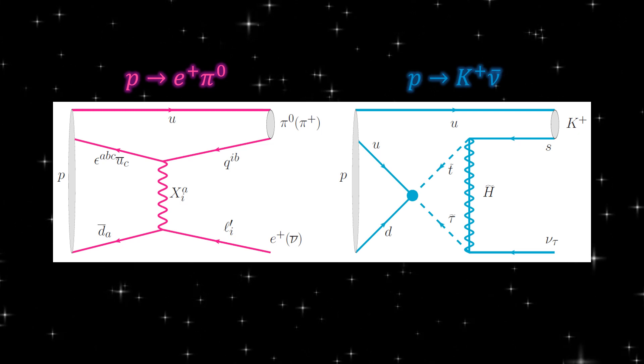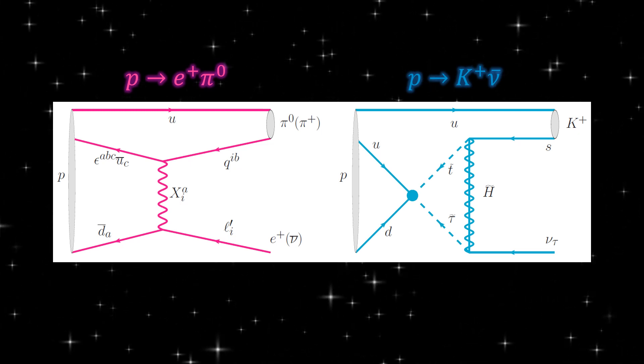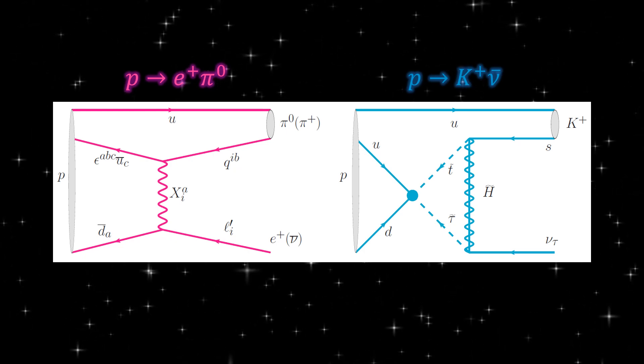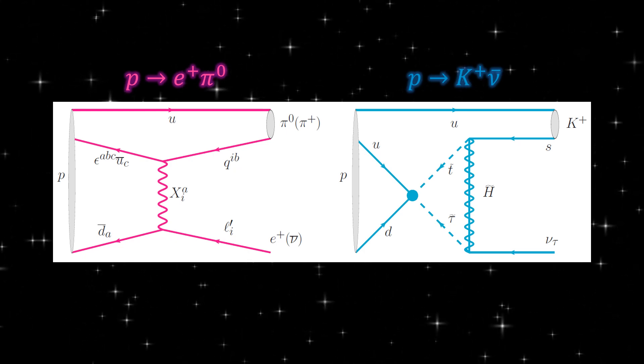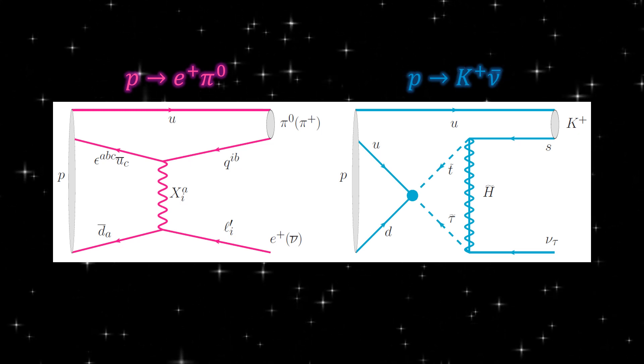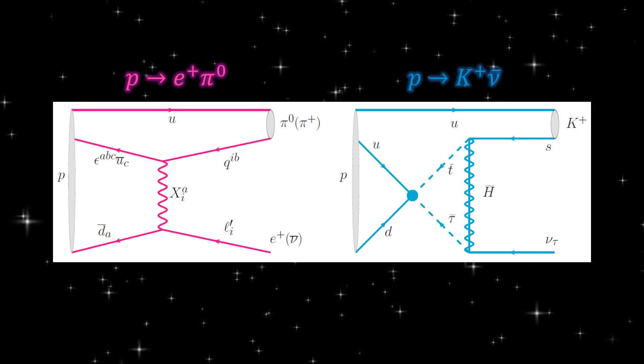In models of quark-lepton unification, such as the Grand Unified Theories, baryon number is necessarily violated. As a result, the proton is not stable, and decays dominantly into E+ π0 in non-supersymmetric theories, or K+ ν̄ in supersymmetric theories.